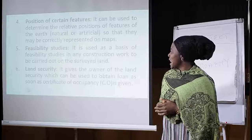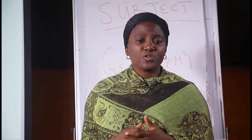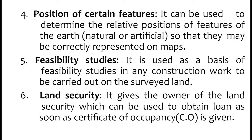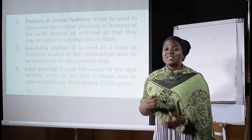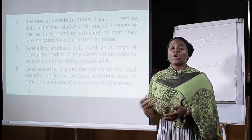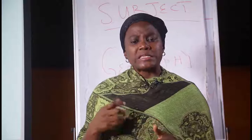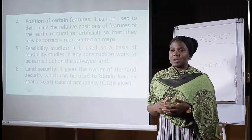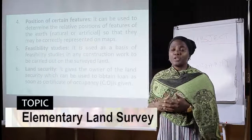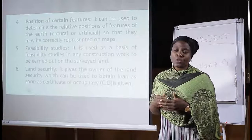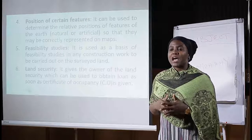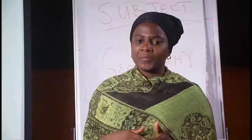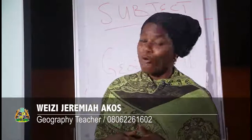Number six, we have land security. It gives the owner of the land security, which can be used to obtain a loan as soon as a certificate of occupancy is given. Certificate of occupancy, which we commonly call CO. A certificate of occupancy is a document that shows that the land in question belongs to you. A certificate of occupancy has several documents attached to it, including the cadastral plan of such an area in a government reserve area. These are the importance of land surveying.